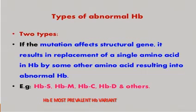What are the types of abnormal hemoglobin? There are two main types. If the mutation affects the structural gene, it results in the replacement of a single amino acid in normal hemoglobin by some other amino acid, resulting in abnormal hemoglobin.